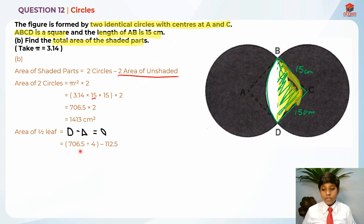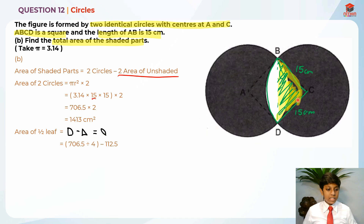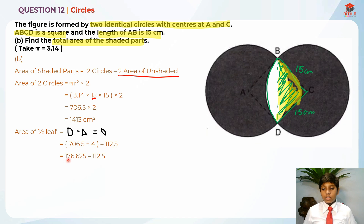It's basically 706.5 — because this is one circle — divided by 4, which gives us the quarter circle, minus 112.5. The triangle: in order to find the triangle it's half times base times height, so half times 15 times 15, which gives us 112.5 cm². So it gives us 176.625 minus 112.5, which gives us 64.125 cm² — so this is how you do it.